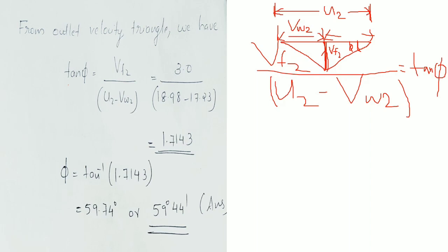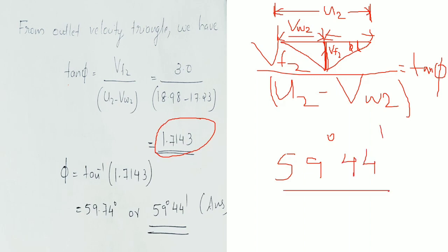Tan φ is equal to Vf2 divided by (U2 minus VW2). Substituting the value gives 1.7143. Taking the inverse tangent of 1.7143, the final answer is 59 degrees 44 minutes.